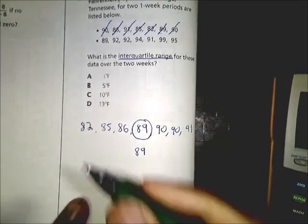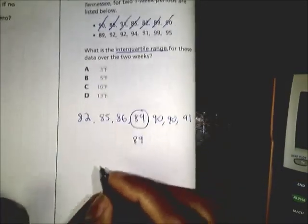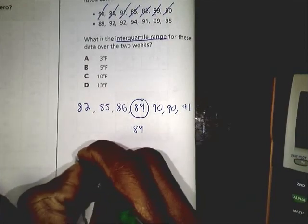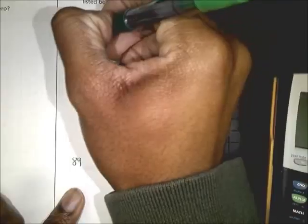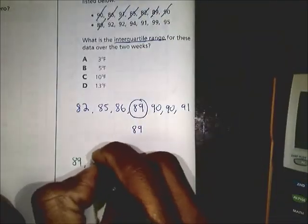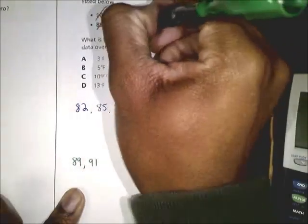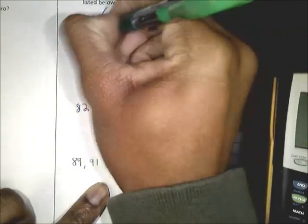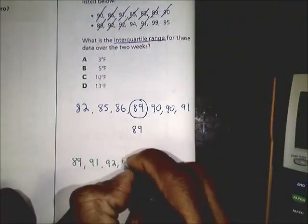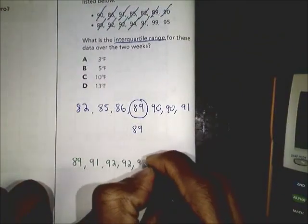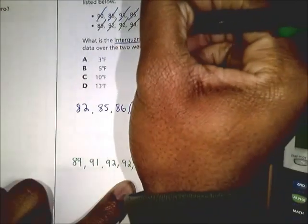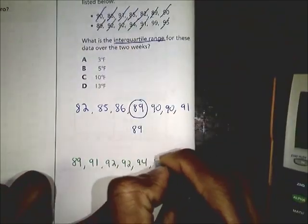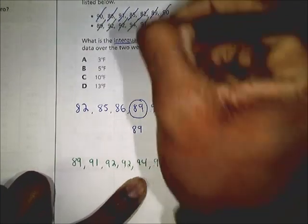Okay, so arrange it in order from least to greatest. So you could have 89, 91, 92, 92, 94, 95, and 99.